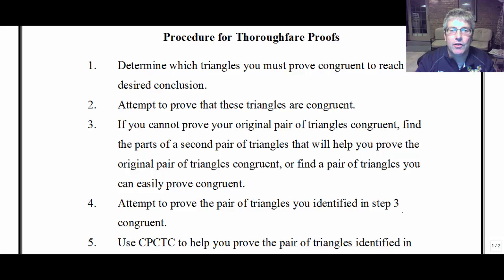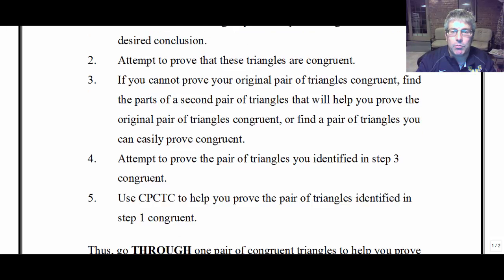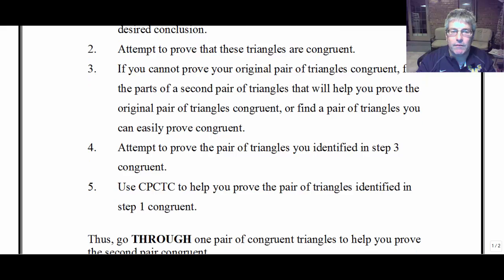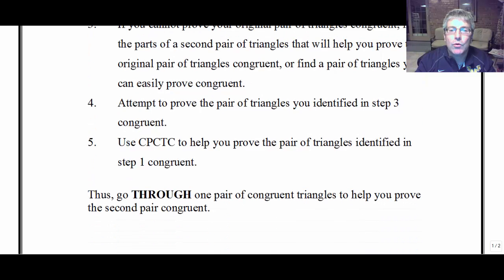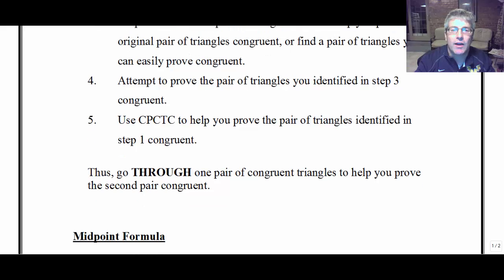As it says here in the notes: if you can't prove your original pair of triangles congruent, find the parts of a second pair of triangles that will help you prove the original pair congruent. Or, find a pair of triangles you can easily prove congruent. Then attempt to prove that identified pair congruent, and use CPCTC to help prove the second pair of triangles congruent. Thus, we'll end up going through one pair of congruent triangles to help prove the second pair. Proofs will be a little bit longer now, a little more involved — I know you guys will be up to the task.